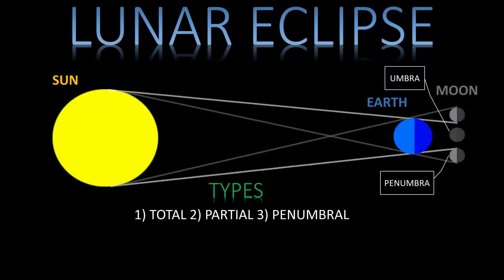Today we are going to look at lunar eclipses. A lunar eclipse occurs when the earth comes in between the sun and the moon, and partially or totally blocks the light of the sun from falling onto the moon's surface.